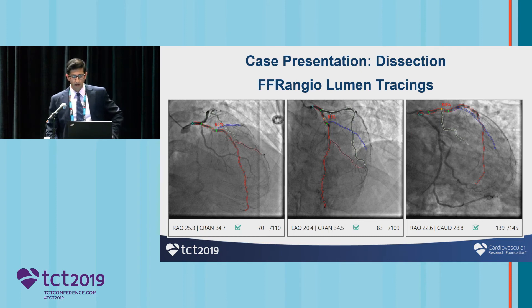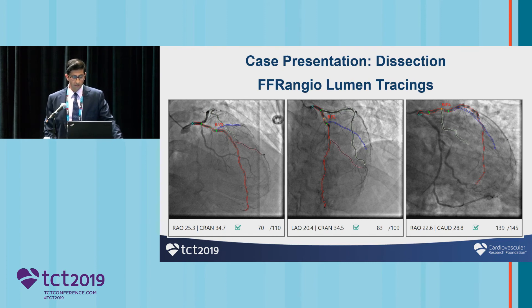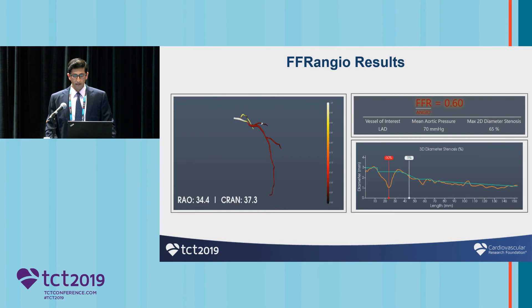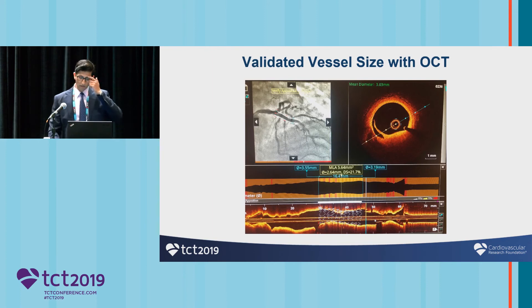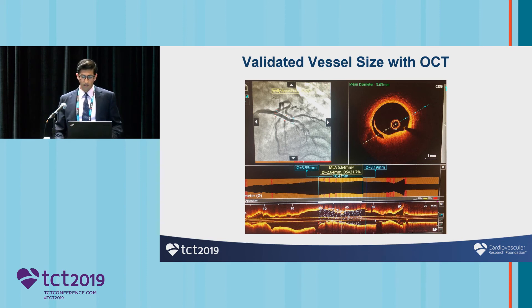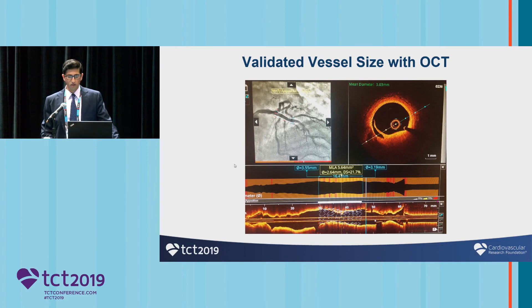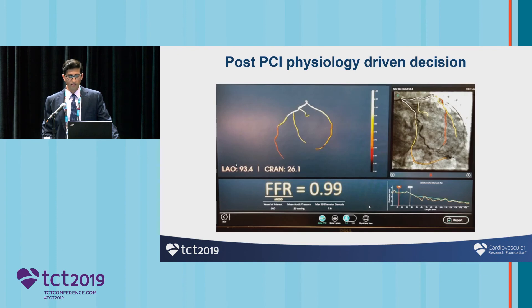This is a case shared by a colleague, Dr. Nerula from San Diego. The lesion in the LAD is appropriately mapped out with three variable projections, and the FFR was strongly positive at 0.6 with a clear step down in the proximal to mid segment. A stent was placed and OCT was performed, revealing a stent edge dissection. He performed a post-PCI FFR angio to assess the physiological significance: the post-PCI FFR was 0.99, and given that result, he elected to leave the stent edge dissection alone — a slightly different application of the technology.